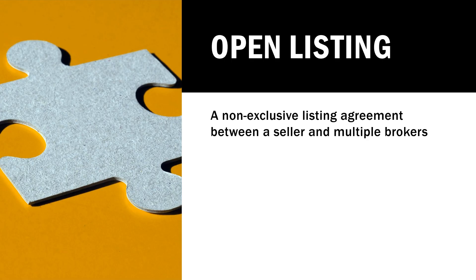O is for open listing. This type of listing, because as the word says it is open, the seller is open to work with as many brokerages as they see fit, and they essentially promise to pay the broker or brokerage that brings them the buyer.